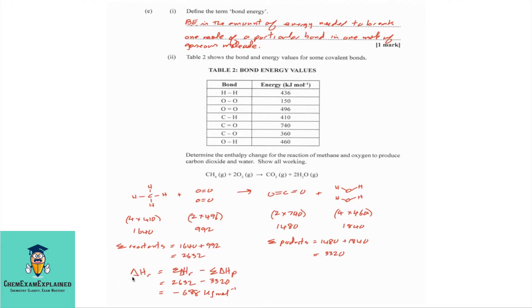The formula that we're going to use is the enthalpy change for the reaction is equal to the sum of the enthalpy changes of the reactant minus the sum of the enthalpy changes of the product. You put in the information 2632 for the reactants minus 3320 for the products to give us a value of negative 688 kilojoules per mole. This reaction is an exothermic reaction.